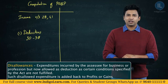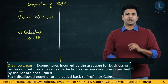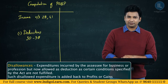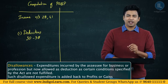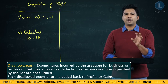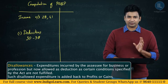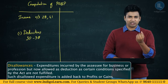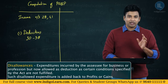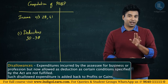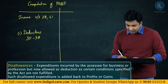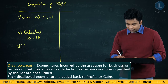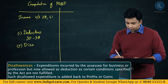Similarly, if certain conditions are not satisfied, certain expenditure which has been incurred and accounted for will not be allowed as a deduction because it is disallowed. Such disallowances — you will add them back.